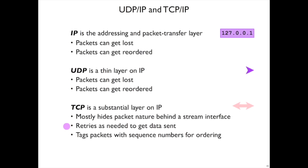TCP also detects when packets have gotten lost and resends them. That's based on more messages going back and forth than the ones you explicitly send. Acknowledgement messages come back, or timeout and non-acknowledgement messages may come out, so that things get retried. Finally, TCP makes sure that things arrive in the right order, so it puts sequence numbers on packets that it sends out so that it can reassemble things.